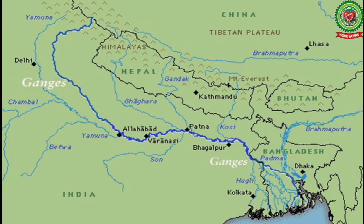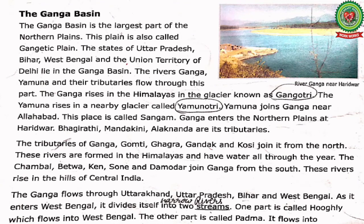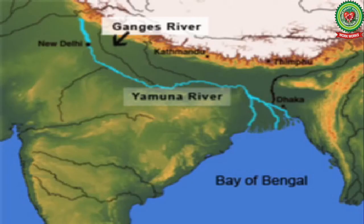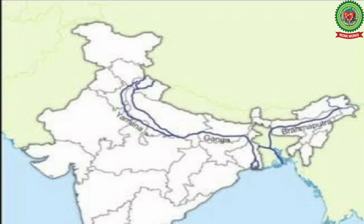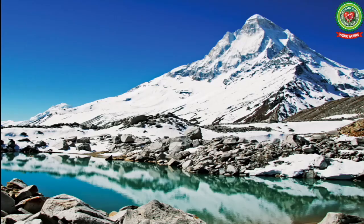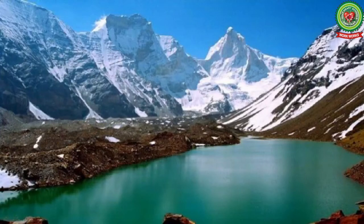The rivers Ganga, Yamuna, and their tributaries flow through this part. The Ganga rises in the Himalayas in the glacier known as Gangotri. The Yamuna rises in a nearby glacier called Yamunotri — circle both Gangotri and Yamunotri as these are our key terms. Yamuna is the main tributary of the Ganga. A glacier means a moving sheet of ice.